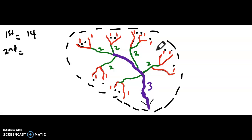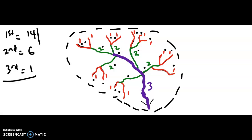For the second-order streams, how many do we have? 1, 2, 3, 4, 5, 6 — we have 6. For the third-order streams, we only have one. This region in yellow, where two second-order streams merge, is where the start of the third-order stream begins. The third-order stream merging with the second-order stream maintains the third order as it goes down — two second-order streams simply form a third.